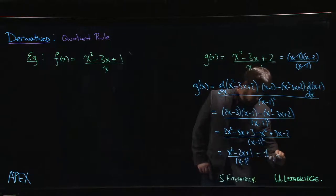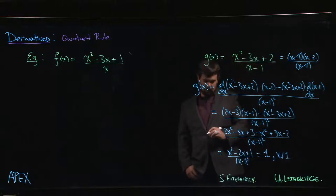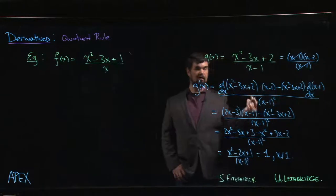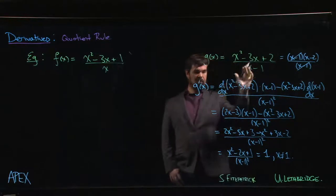And the square of x minus 1 is indeed x squared minus 2x plus 1. So this is equal to 1 as long as x is not equal to 1. So the moral of the story here is don't go ahead and blindly apply the quotient rule. Look to see if you can simplify first.